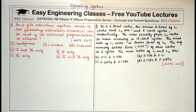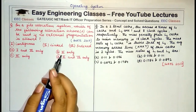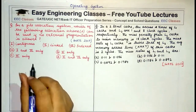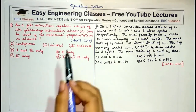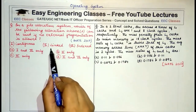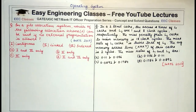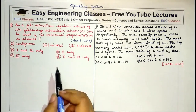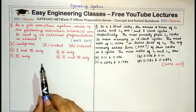The first question is on file allocation systems, which states: which of the following allocation schemes can be used if no external fragmentation is allowed? If you are clear with the concepts of file allocation, this question is easy — linked and indexed allocation do not suffer from external fragmentation while contiguous allocation does. So the correct answer is D: options 2 and 3.